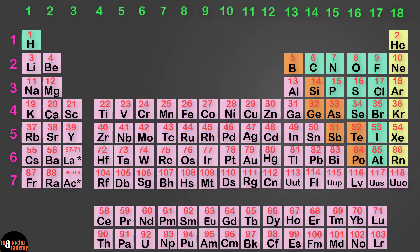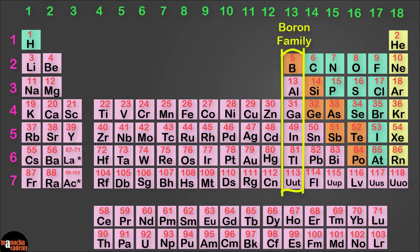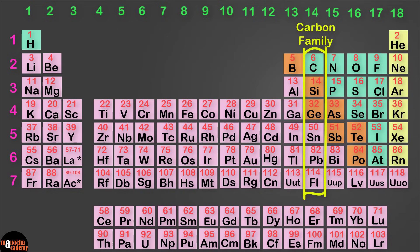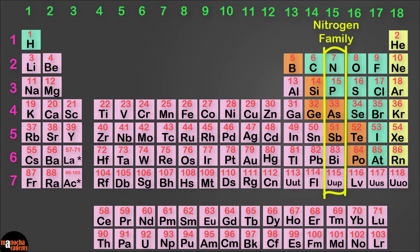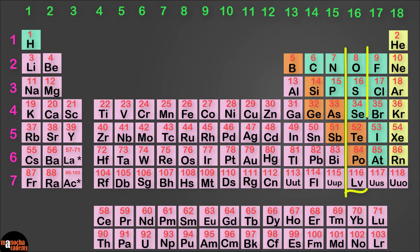Now moving on to group 13, this group is called the boron family because boron is the first member in the group. Similarly, group 14 is called the carbon family, and then you have group 15 as the nitrogen family.